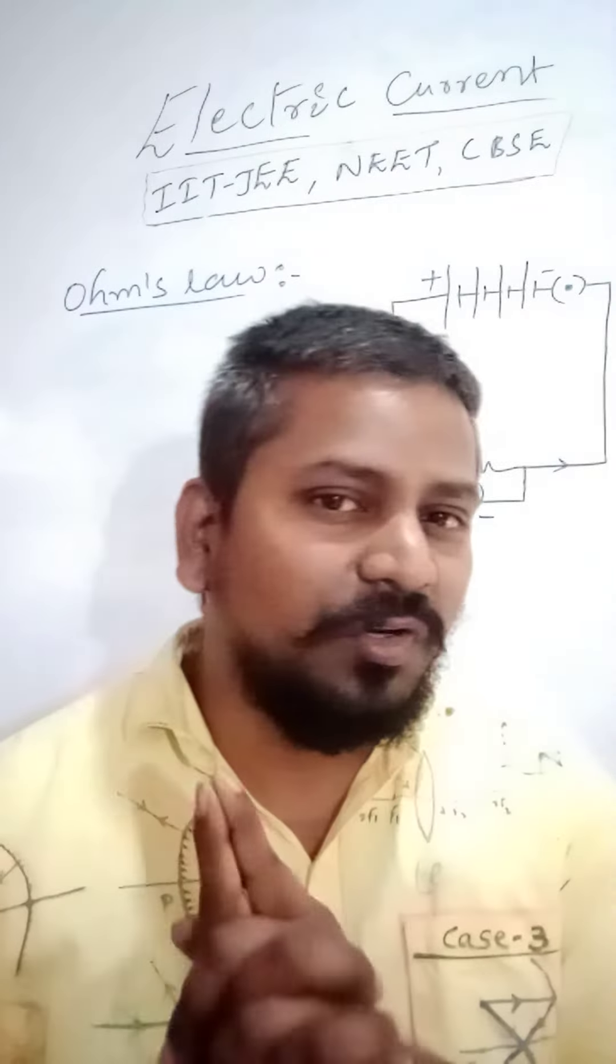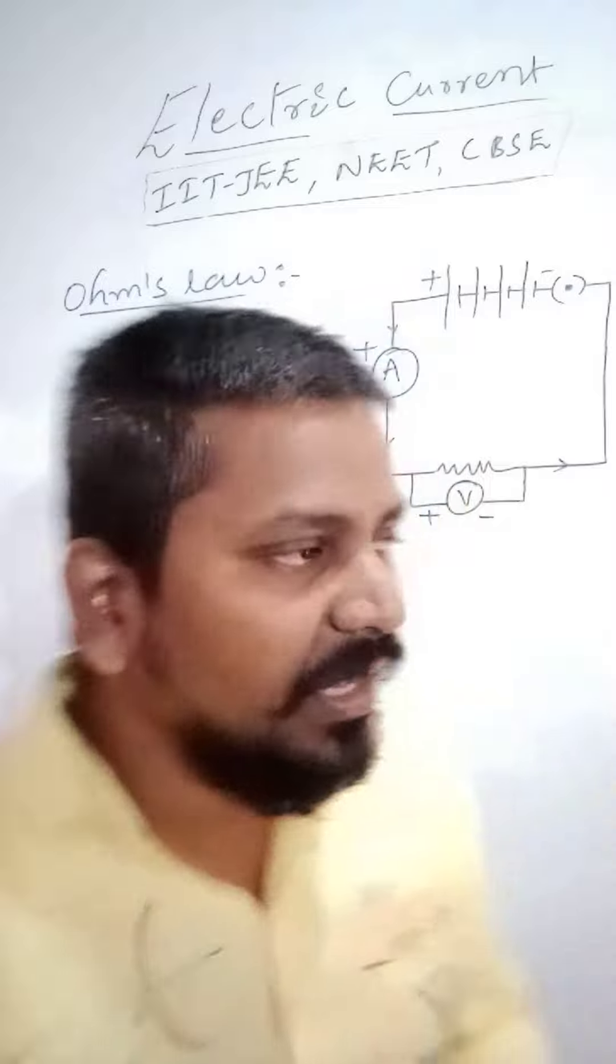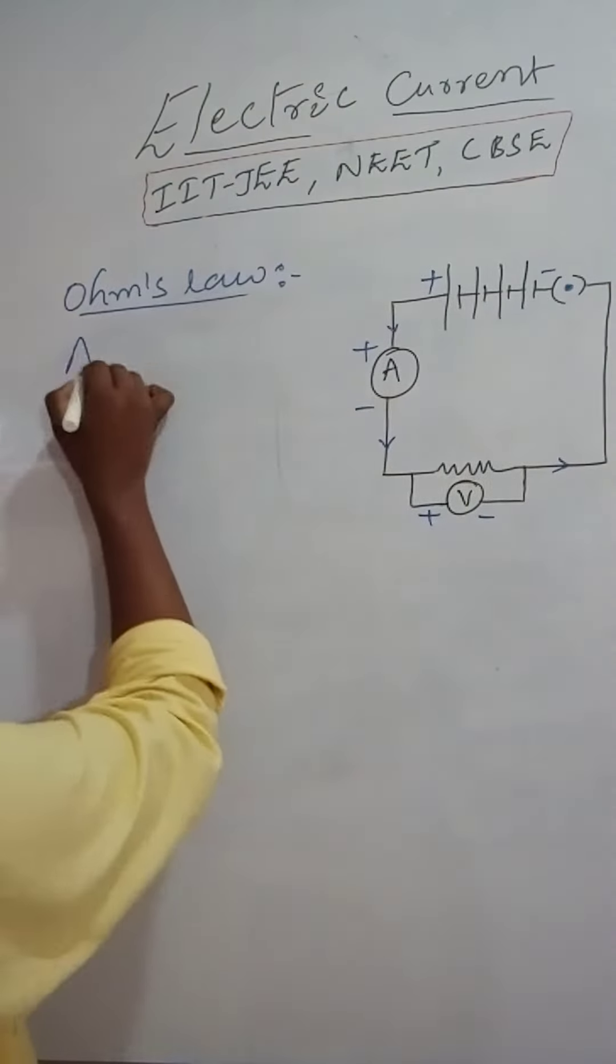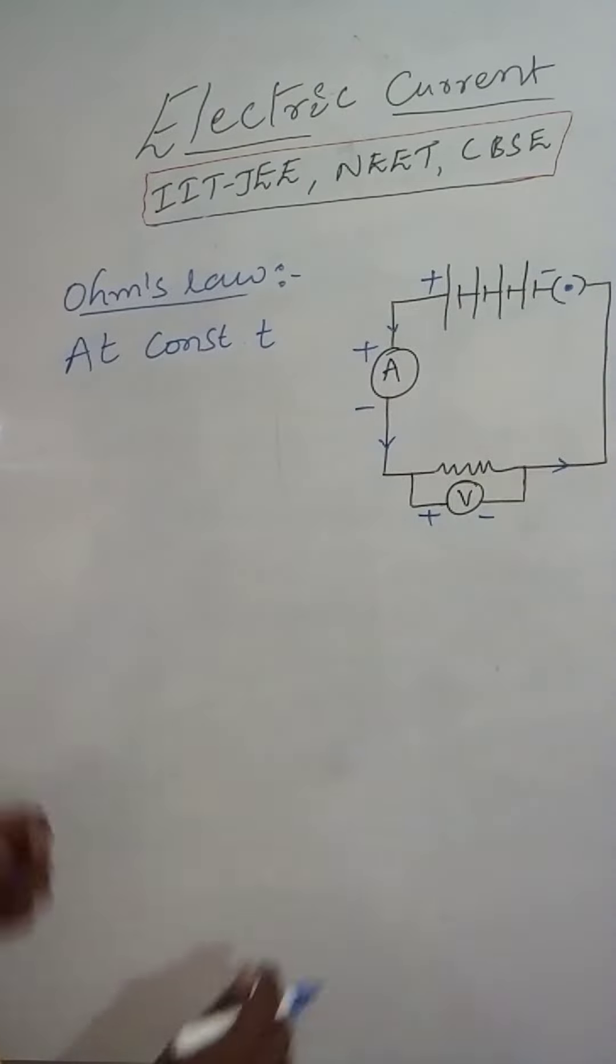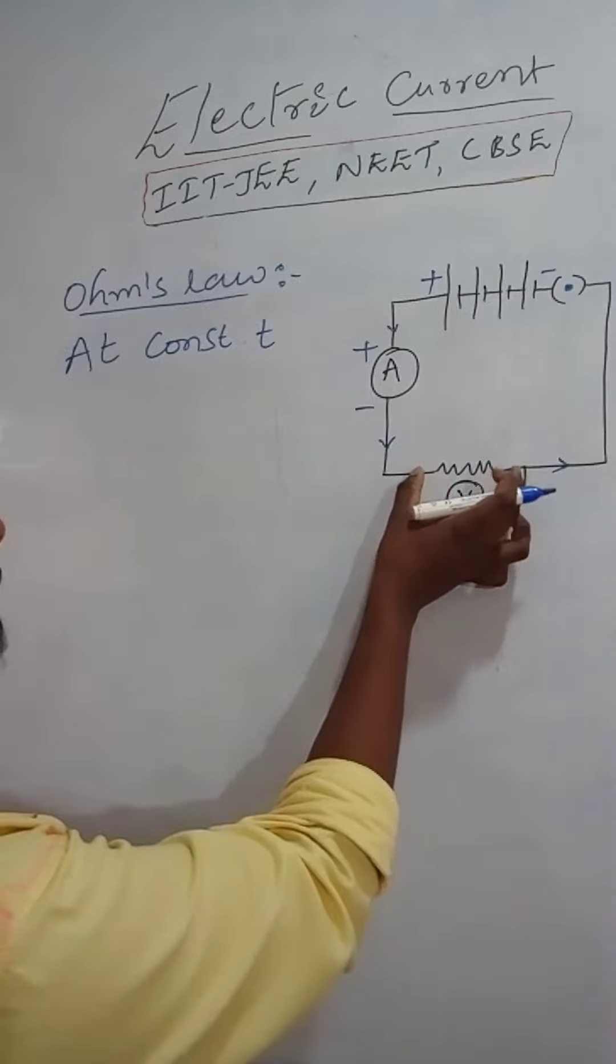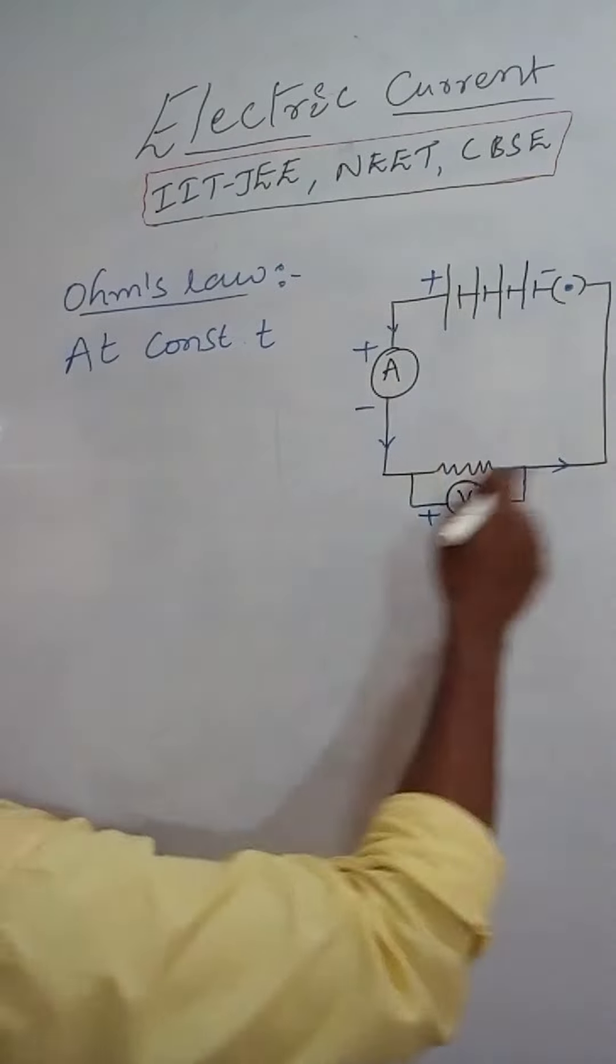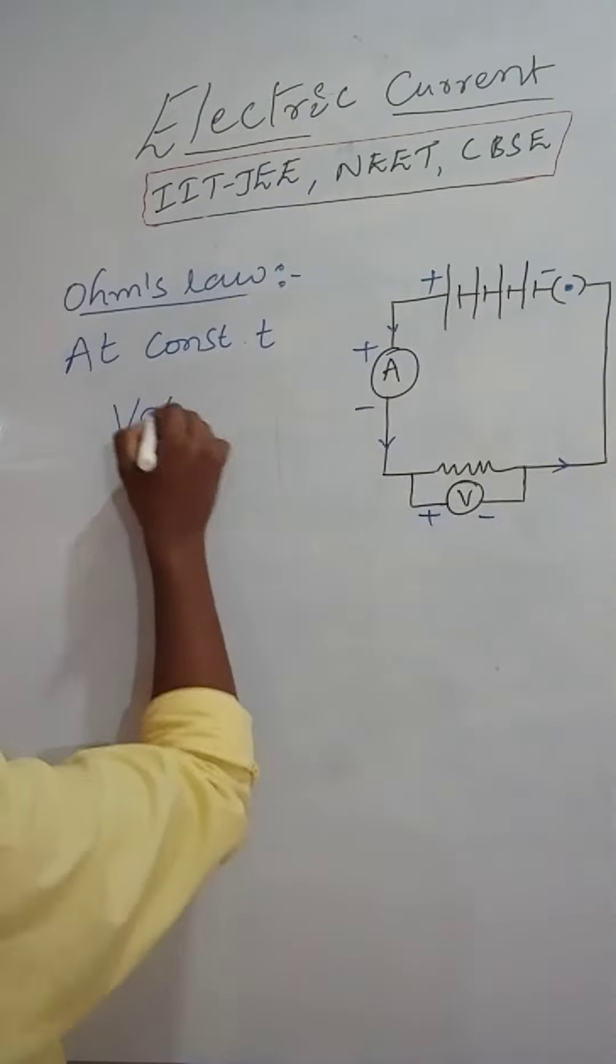Today we are going to discuss the topic electric current, in that Ohm's Law. So what is Ohm's Law? At constant temperature, the potential difference across the ends of the given metallic wire in an electric circuit is directly proportional to current flowing through it.